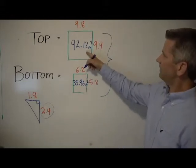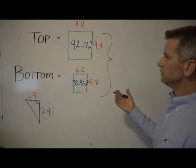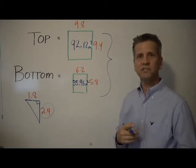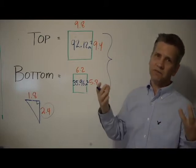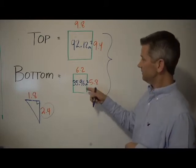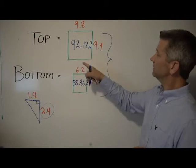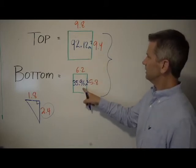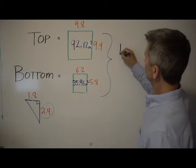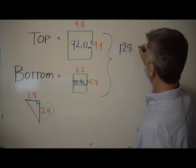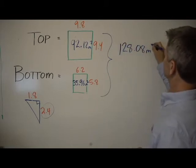Now we simply add these two numbers together and we divide by two. That's how we find averages. We simply take whatever numbers we're adding together to find an average with, and we divide it by the amount of numbers that we've added together. In this case, two numbers. So 92.12 plus 35.96 is 128.08 square meters.